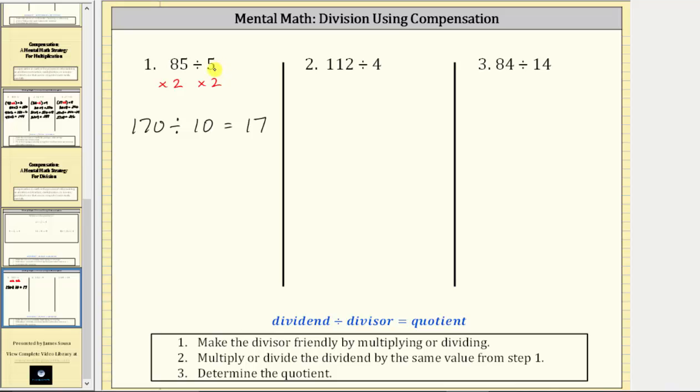On number two, we have 112 divided by four. To make the divisor more friendly or smaller, because it's even, let's divide the divisor by two. If we divide the divisor by two, we must also divide the dividend of 112 by two. By dividing both of these by two, we create an equivalent quotient.